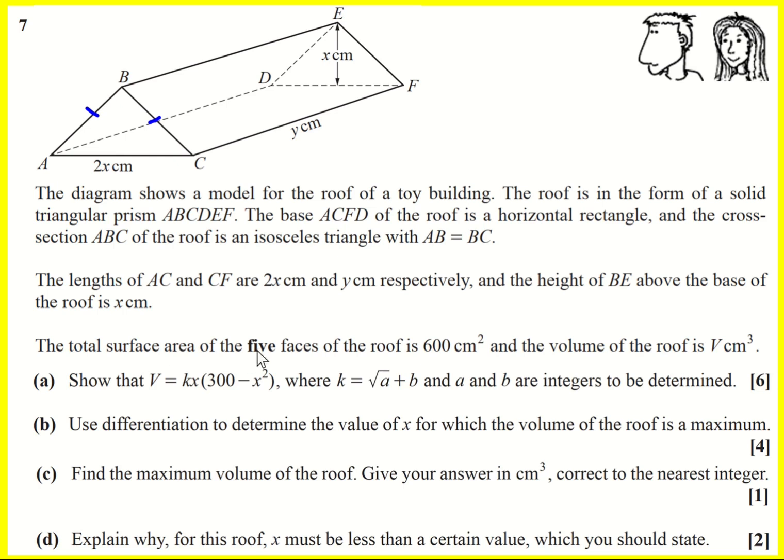Everything's in terms of X or Y as well. We're then told the total surface area of the five faces is 600 centimeters squared and the volume of the roof is V. We're being asked to show that the volume is actually this all in terms of X. So this is an application of differentiation problem.